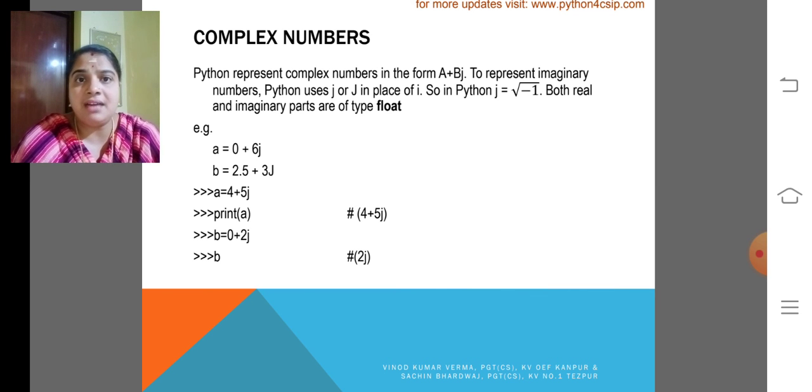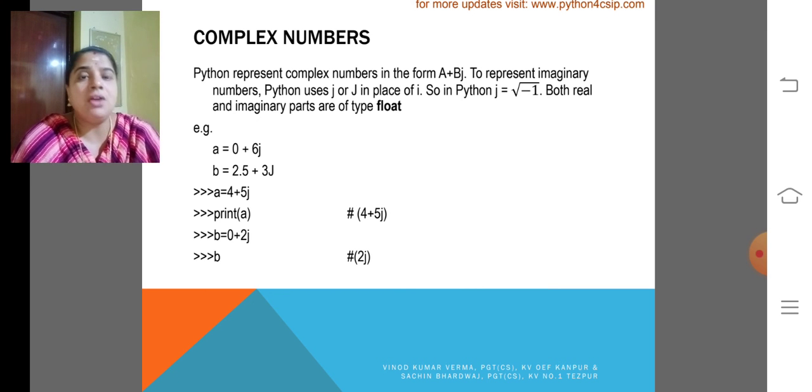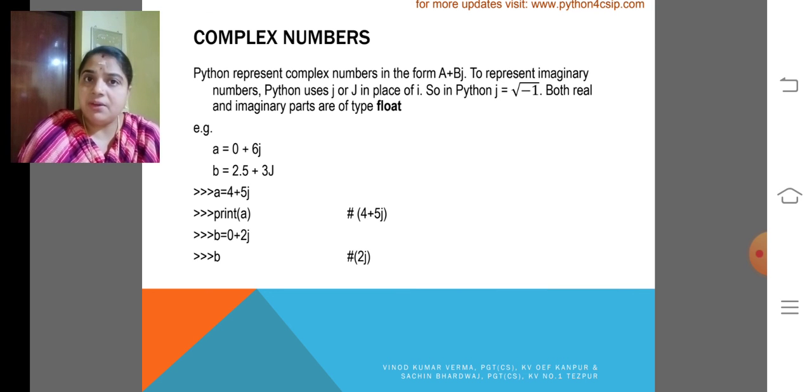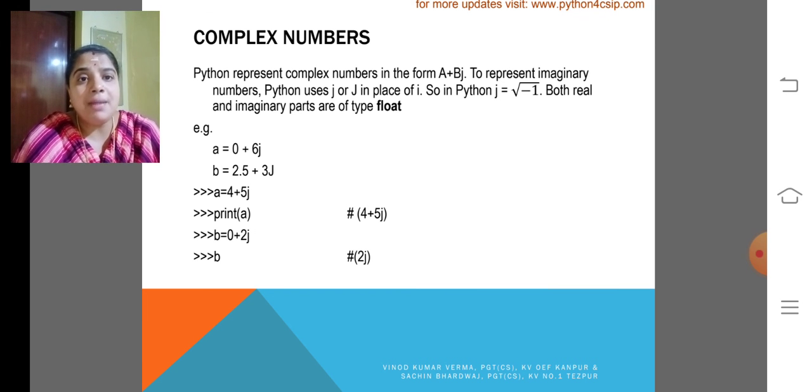We have to display 10 plus 6J. What is the imaginary part there? 6J. Both real and imaginary parts are of float type. The complex numbers are of type float only. I think you are all clear about complex numbers.